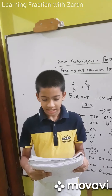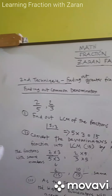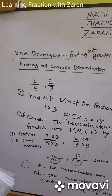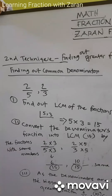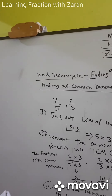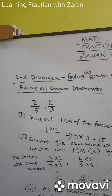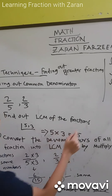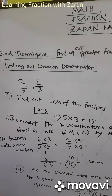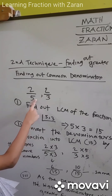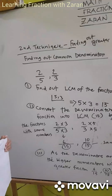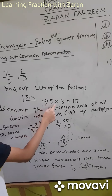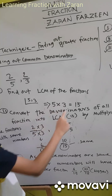Now I will teach you the second technique: finding a common denominator. We will find the bigger fraction between 2 by 5 and 2 by 3. The first step is to find the least common multiple of the denominators 5 and 3. Since 5 and 3 have no common factors, we multiply them: 5 multiplied by 3 is 15.